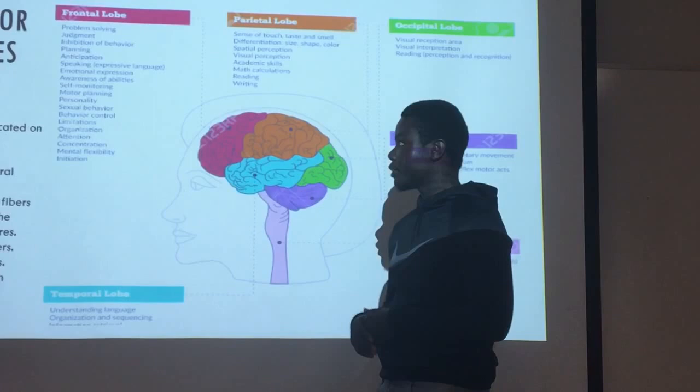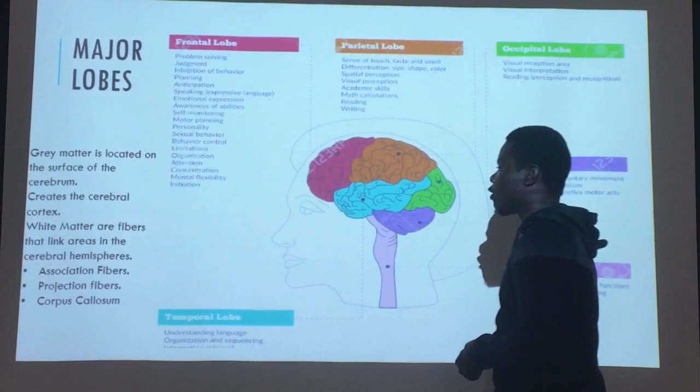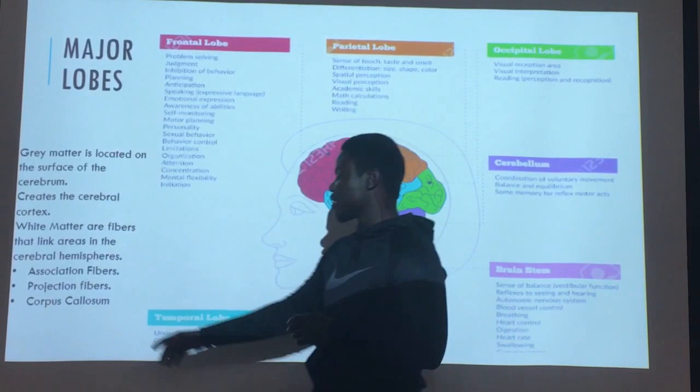The cerebrum is composed of white matter fibers that link the cerebrum together, which is considered the corpus callosum, and the cerebellum is where the gray matter is located on the surface.